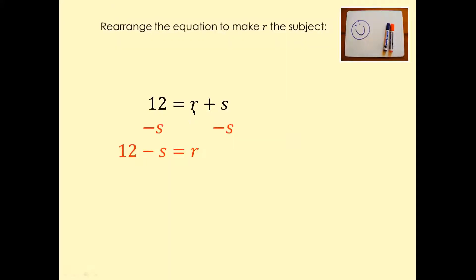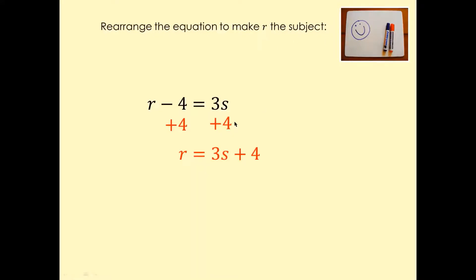So for example: 12 equals r plus s. You want to make r as a subject. So do minus s on both sides — plus s and minus s are going to cancel, and you're left with 12 minus s equals r. This is minus four, so plus four on both sides — that's going to cancel, and r is going to be 3s plus four.